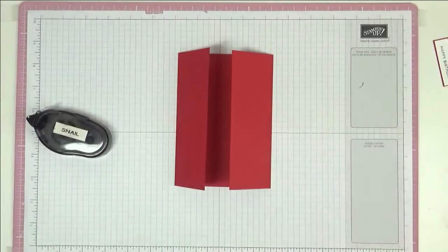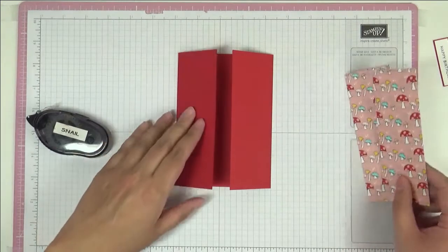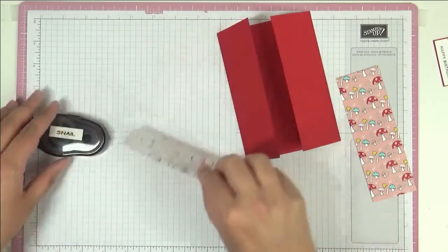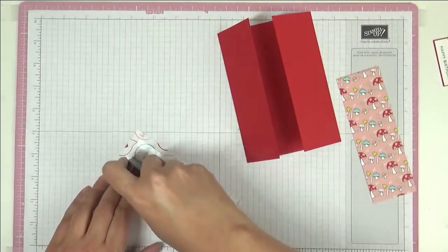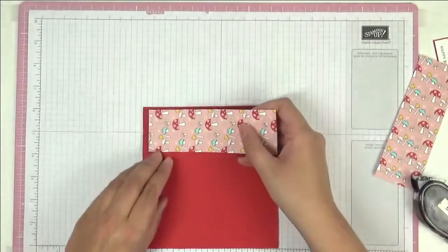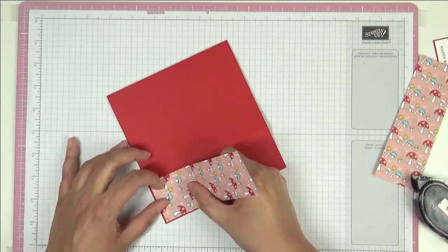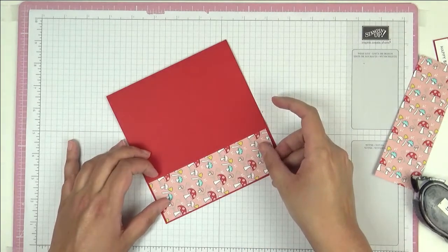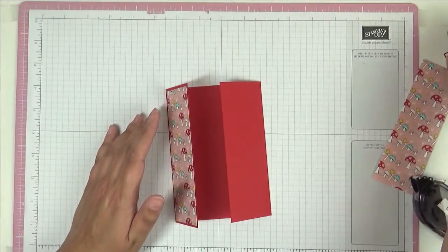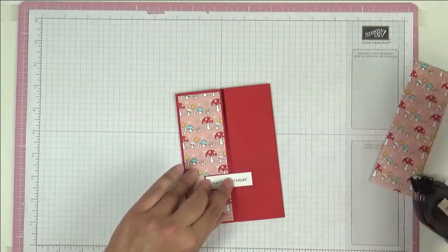Bring back the card base and we are going to start to stick down our paper. Now this is the Snailed It Designer Series paper. All the measurements will be on the blog post on my website and the links to that are below in the description box. So we're going to just put this little panel on here. Like that.